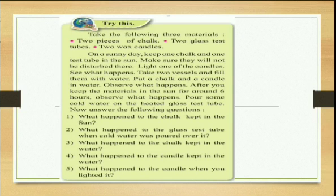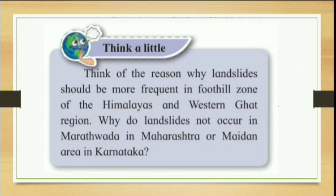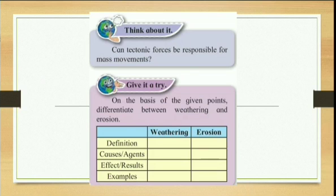Next, 'Try This' — there is an activity based on pieces of rocks, glass test tubes, and wax candles — this activity has been eliminated. Next, 'Think a Little: Think of a reason why landslides should be more frequent in foothill zones of the Himalayas and Western Ghats' — no question will be asked on landslides. Also, 'Think About It: Can tectonic forces be responsible for mass movement?' along with a table on weathering and erosion — even the 'Give It a Try' part has been eliminated.